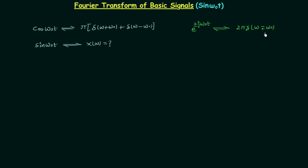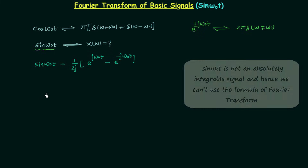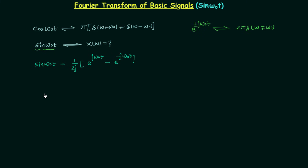We can write sin(ω₀t) equal to 1/(2j) times the quantity e^(jω₀t) minus e^(−jω₀t). Now we will take the Fourier transform on both sides, so on the left hand side we have the Fourier transform of sin(ω₀t).